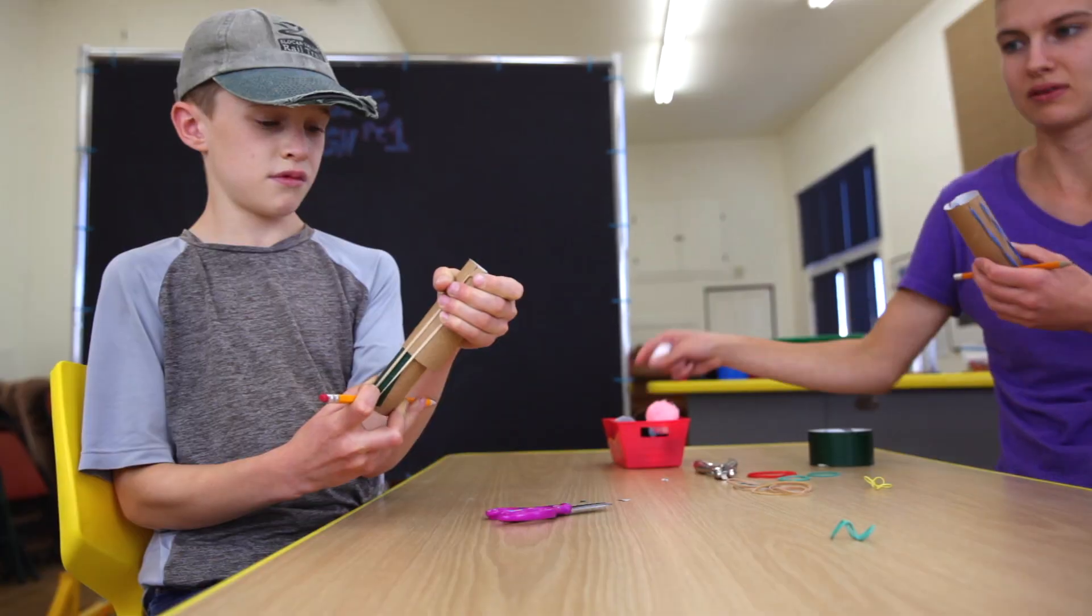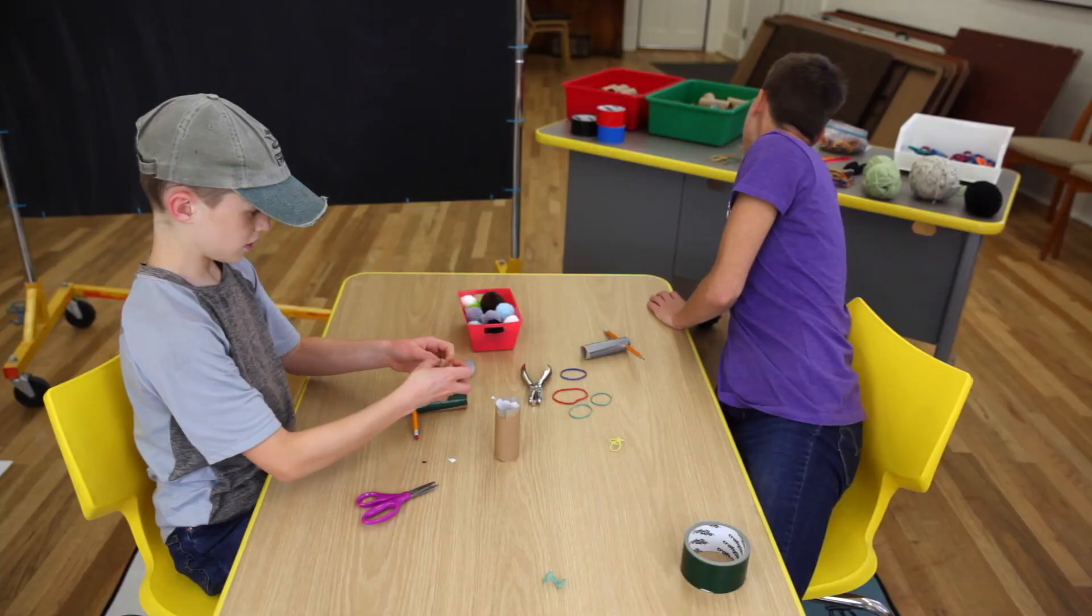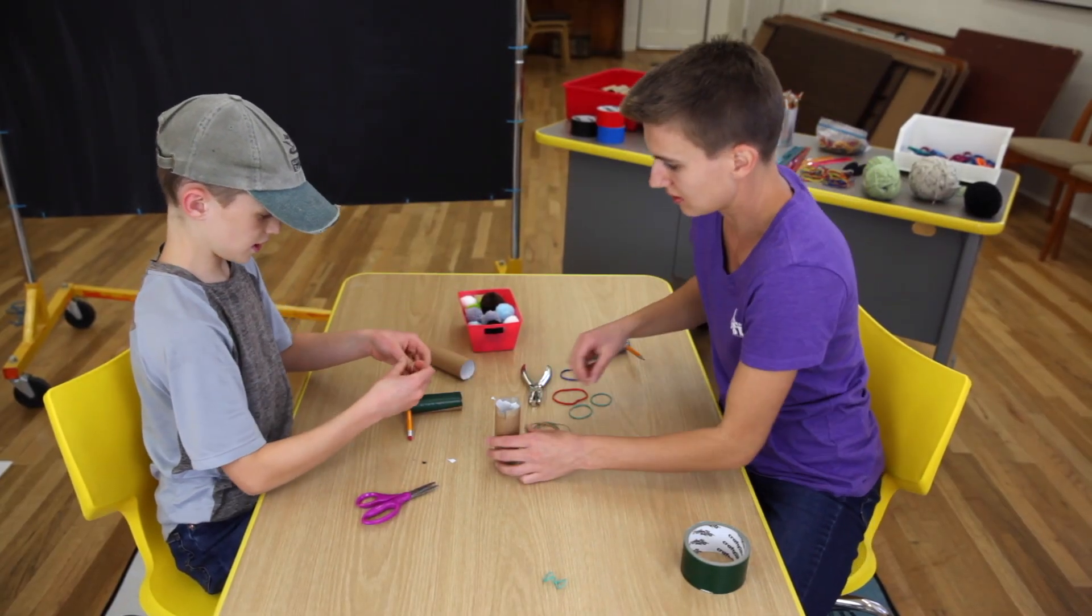I'll provide each child several different sizes of rubber bands and challenge them to figure out the best rubber band for the job by measuring how far the cotton ball launches with each type. Giving them this goal to focus on will provide the structure they need to stay on task during the program.